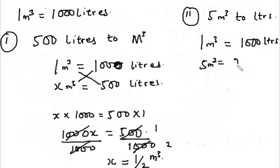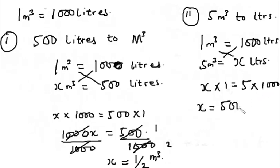So cross multiplying from here, you have x times one, and x times one is equal to five times one thousand. So x times one is x, which is equal to five times one thousand, which is equal to five thousand.